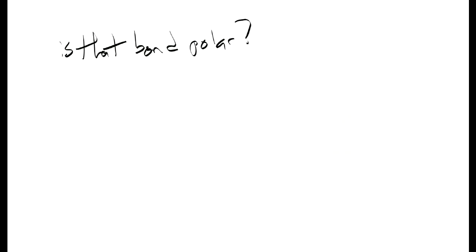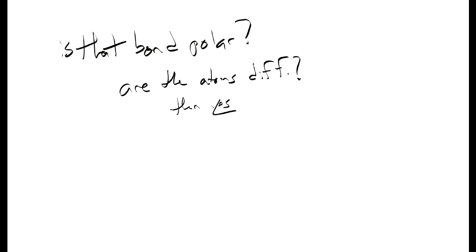What you need to take away from this section is: is that bond polar? Unless you really want to look things up and be precise, just ask yourself — are the atoms different? If it's two non-metals and they're not the same element, go ahead and treat it as polar. The only exception to that would be the carbon-hydrogen bond. That's the only one where you can go ahead and say, just as a default, that it's going to be non-polar, even with different elements. And that will do it for section two of chapter seven.